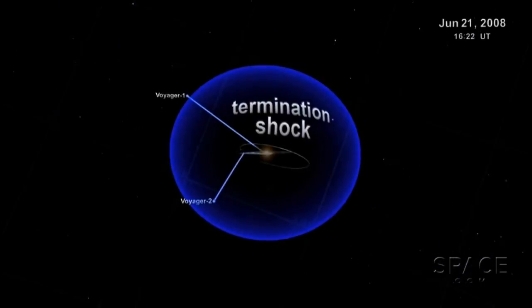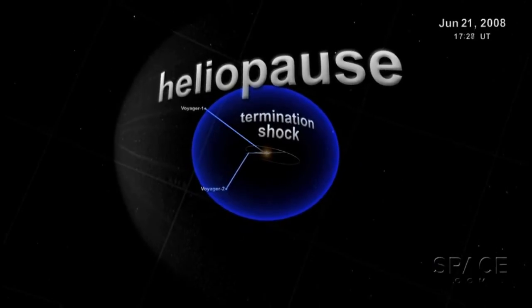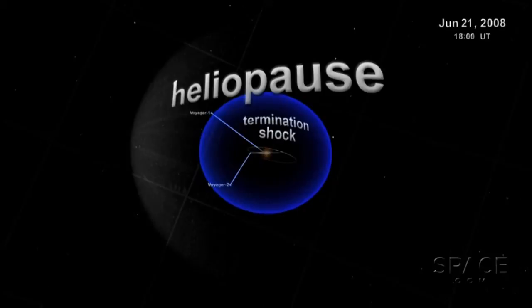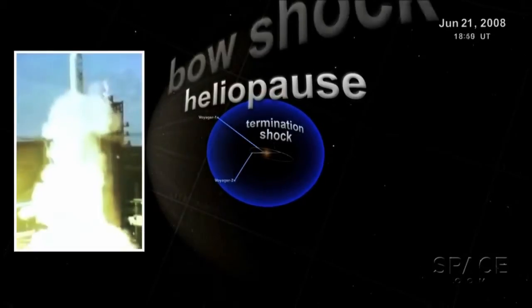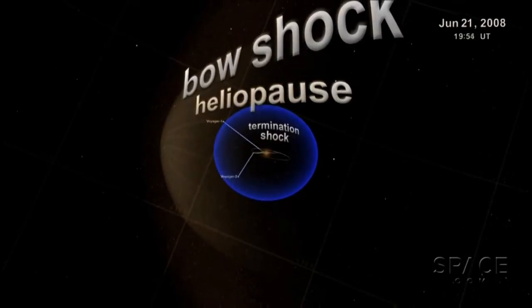That theoretical boundary, researchers call it the heliopause, has clearly now been crossed. In fact, the data indicate that Voyager 1, which was launched on September 5th, 1977, became humanity's first interstellar probe on or about August 25th of 2012.